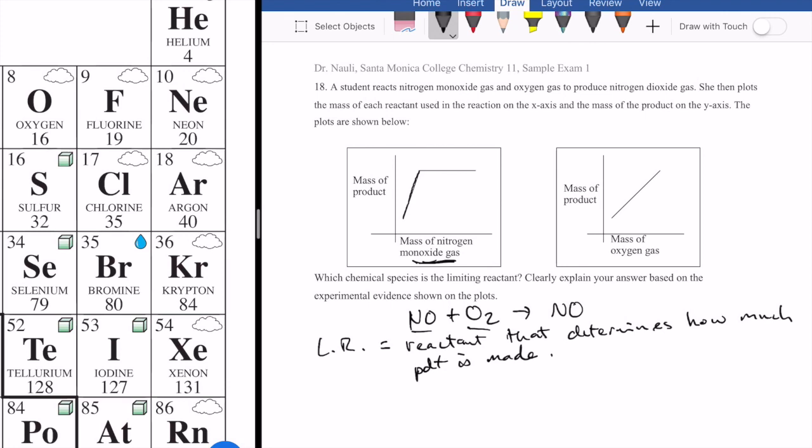But at some point, you keep increasing. If you go this way on the x-axis, you keep increasing the value. When you increase the value or the mass of the nitrogen monoxide, your product is no longer increasing. It just stays the same. In other words, what the first plot, the left plot, is telling you is that increasing nitrogen monoxide does not change the amount of product.